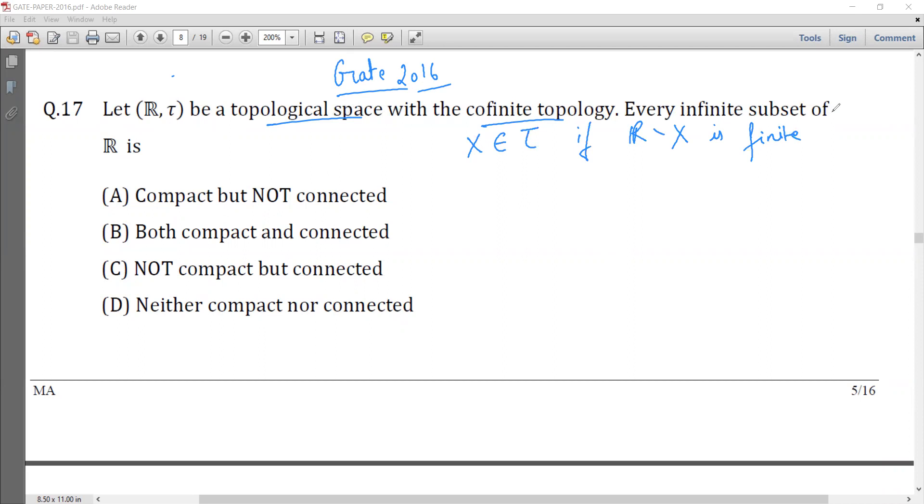Then every infinite subset of R is: compact but not connected, both compact and connected, not compact but connected, or neither compact nor connected.